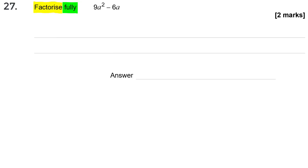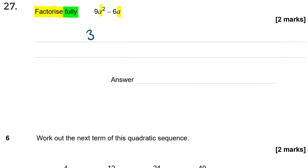Clearly both terms have an a in them, so they have an a in common. The number part — the 9 and the 6 — are both in the 3 times table, so I have a second factor of 3. I'm going to take out the common factors and put them at the front. 3 is common because it goes into 9 and 6, and a is common because it goes into a and a squared. Then I open a pair of brackets and inside are the bits not in common. What do I need to multiply with 3a to get 9a squared? Well, 3 times 3 is 9 and a times a is a squared, so I need 3a. Then a minus sign in the middle, and 3a times 2 is 6a. So I've factorised it fully by getting both common factors out.